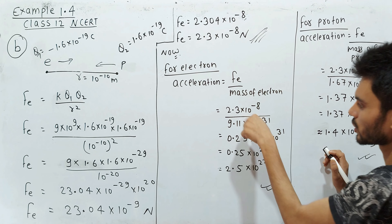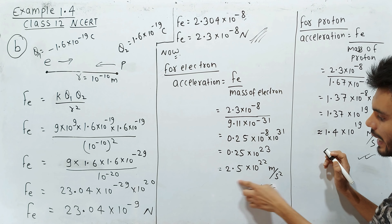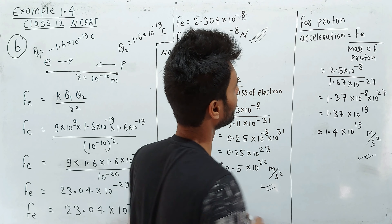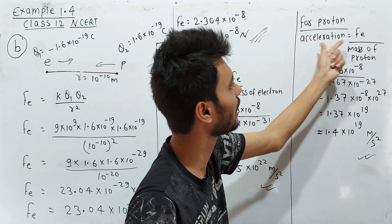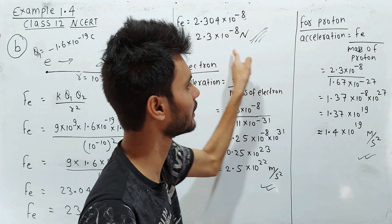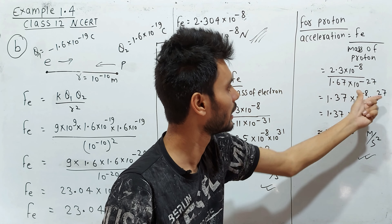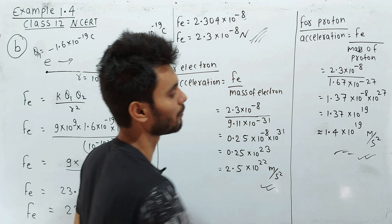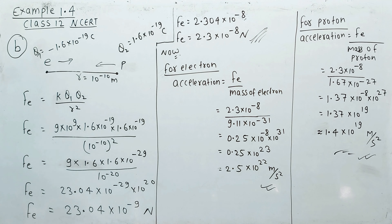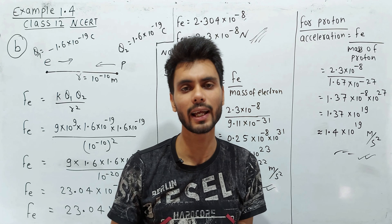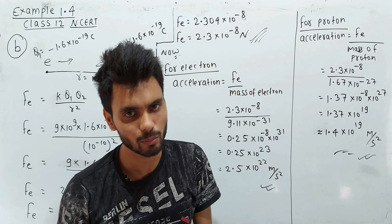Now we calculate the acceleration of the electron using a = F/m, from Newton's second law, where F is the electric force and m is the mass of the electron. After solving, we get the acceleration of the electron. Similarly, the acceleration of the proton equals the electric force divided by the mass of the proton, giving the acceleration of the proton. Please take a screenshot. If you are new to our channel, please subscribe and like the video. Thank you so much, bye.